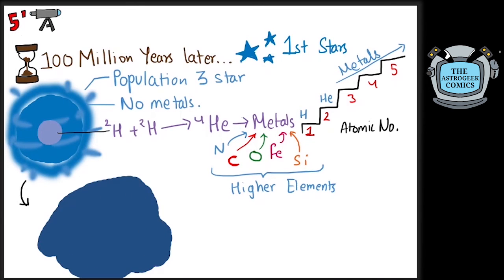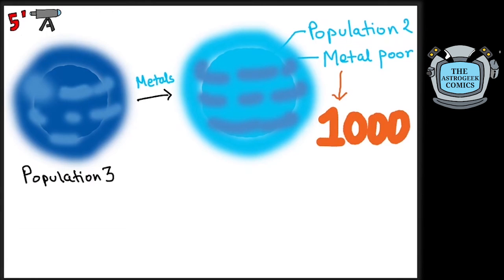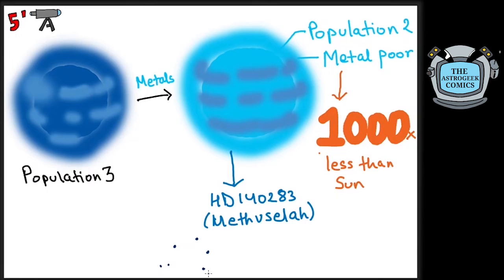As these population 3 stars died, their remains spread out in the universe, spreading these metals everywhere. The second generation of stars that formed from these contain very little metal in them. These so-called population 2 stars are metal-poor stars and contain tens to thousands times less metal than our sun. The star HD140283 or Methuselah is a population 2 star in Libra.